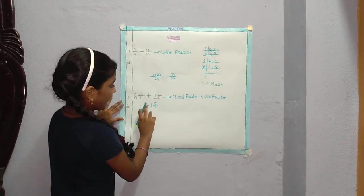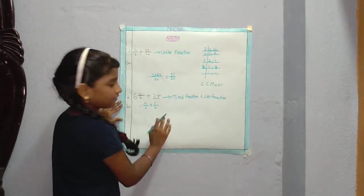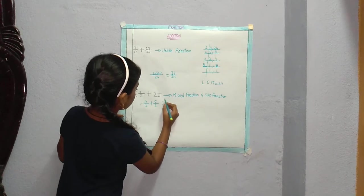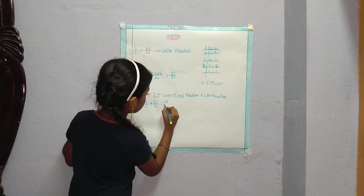Now we have to add directly because this is like fraction. 14 plus 5 is equal to 19 by 2.